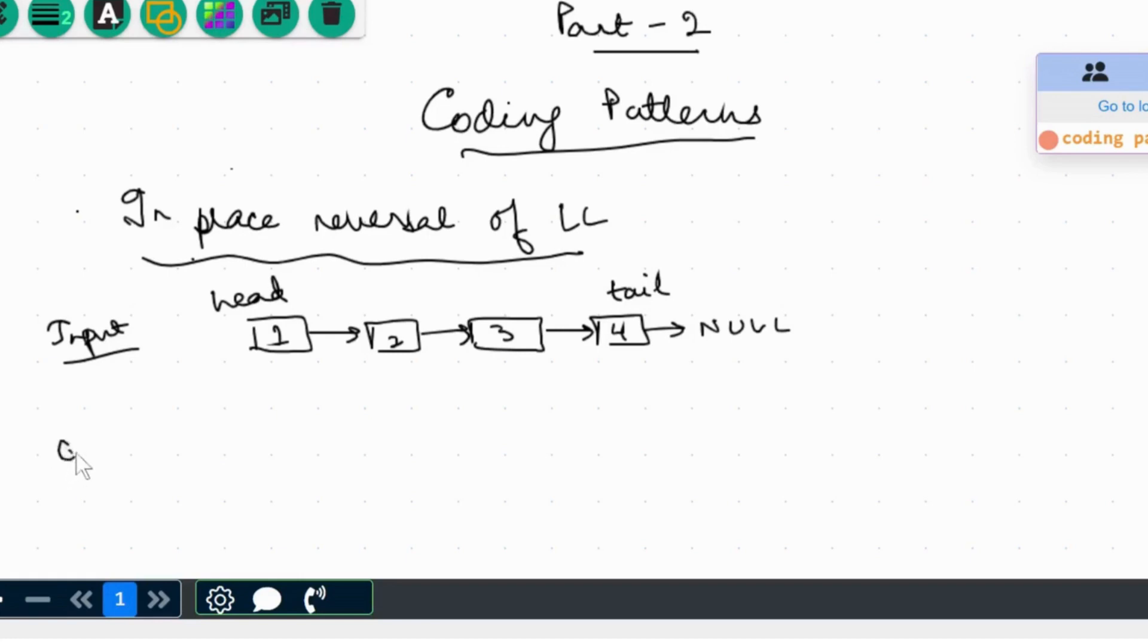So if this is the input, the requirement is we have to reverse this linked list such that this tail node comes at the beginning, the tail node becomes the new head, and it is just pointing in the opposite direction. So 4 will point to 3, 3 will point to 2, 2 will point to 1, and now 1 will point to null. So this is the output.